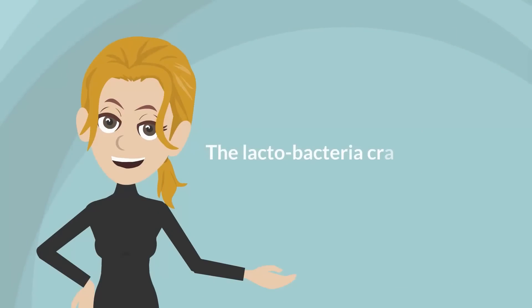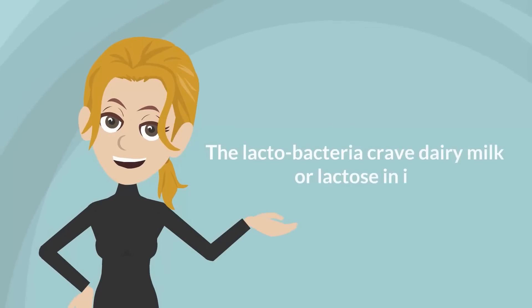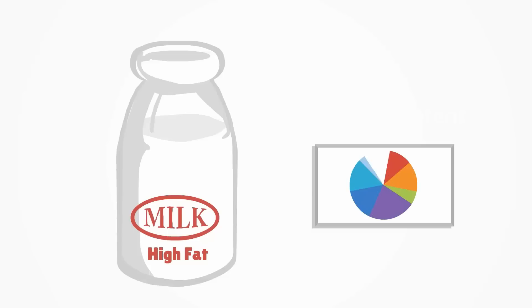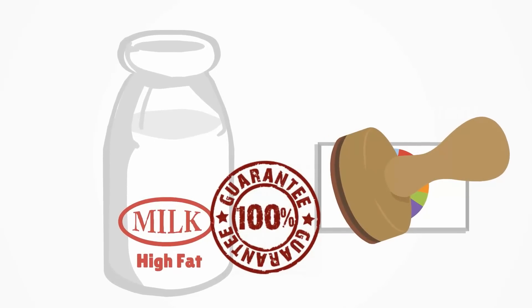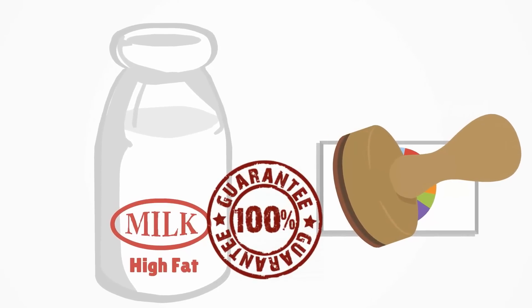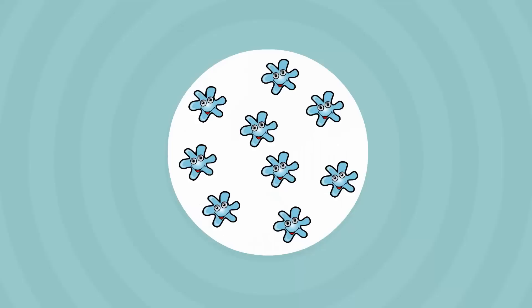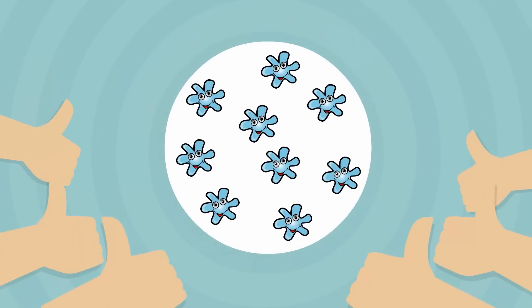The lactobacteria crave dairy milk or lactose in it. By giving it what they want, which is milk with high fat content, as this will guarantee that the milk is naturally balanced, not filtered in any way, and all components are present. Bacterial nourishment and growth are guaranteed.